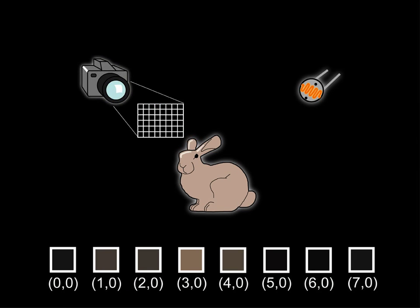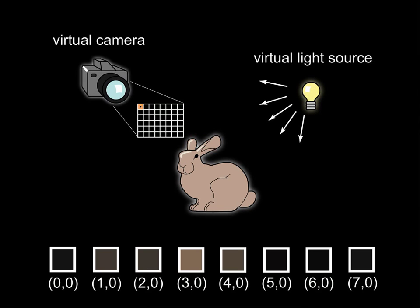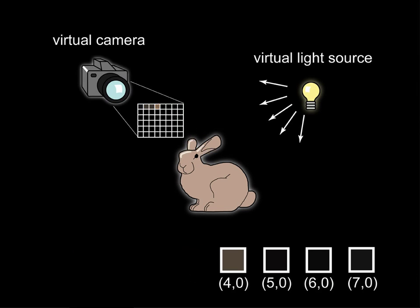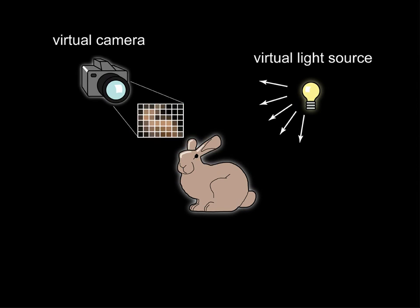Thus, we can transform our projector into a virtual camera and the photosensor into a virtual light source. By putting back the measured values into the correct positions of the camera image array, we can form the picture that would have been taken by the virtual camera. The resolution of this image will be that of the projector.